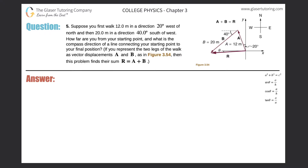Number five. Suppose you first walk 12 meters in a direction 20 degrees west of north, and then 20 meters in a direction 40 degrees southwest. How far are you from your starting point? And what is the compass direction of a line connecting your starting point to your final position?